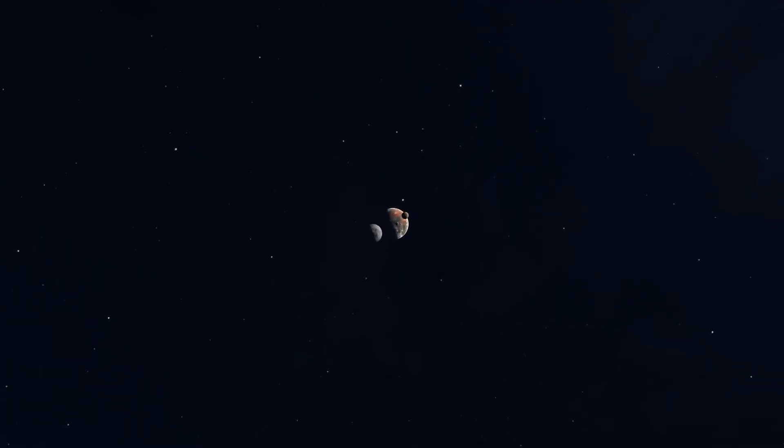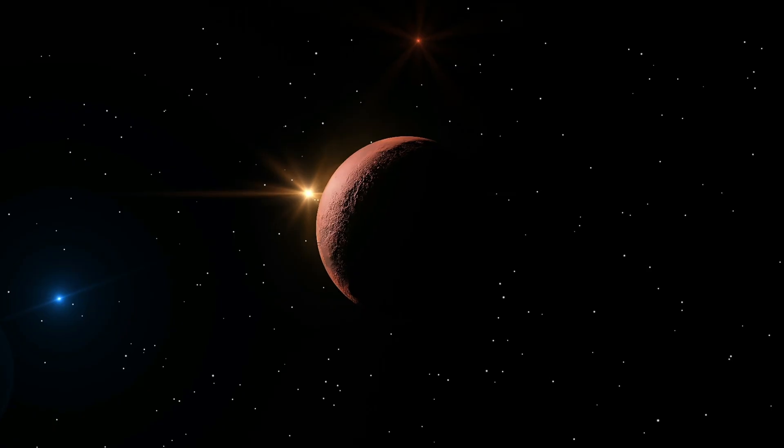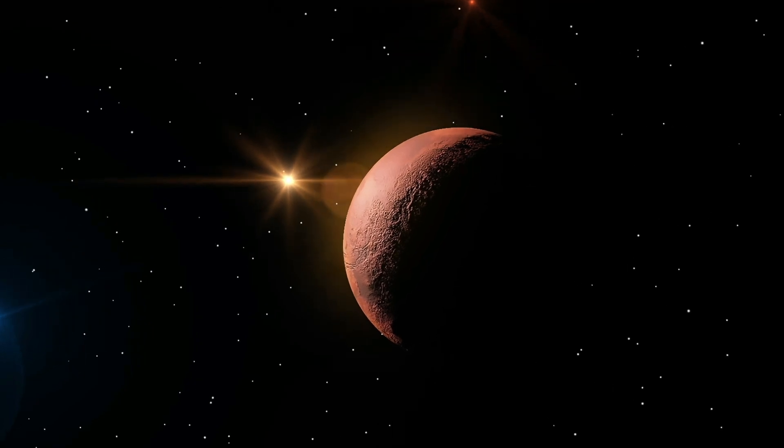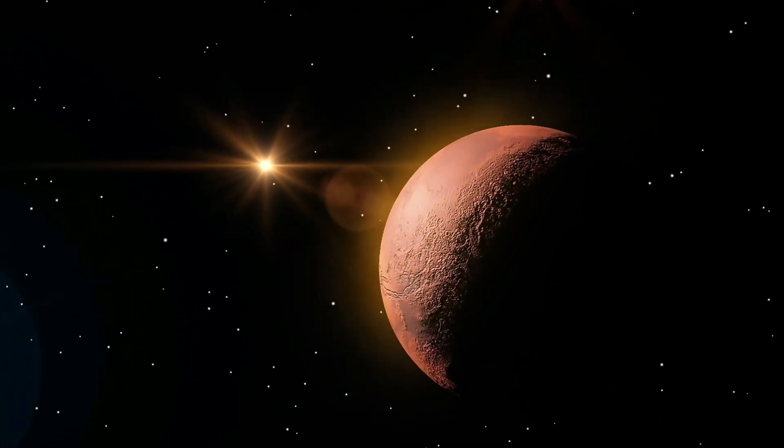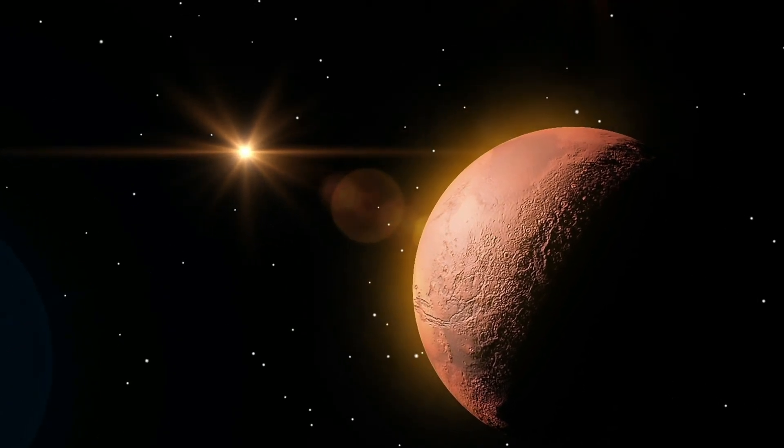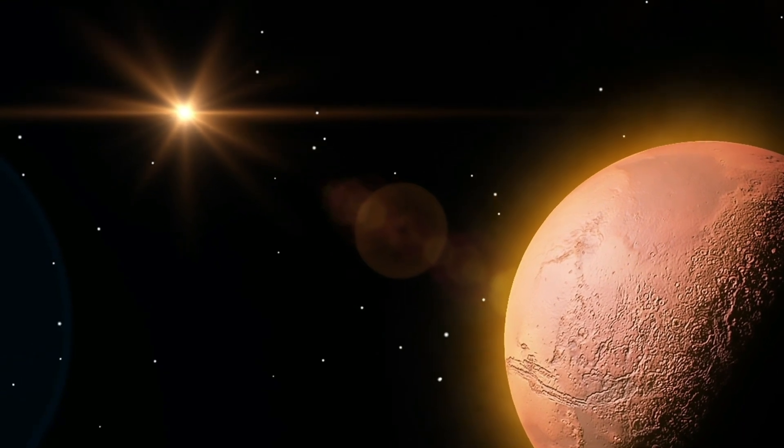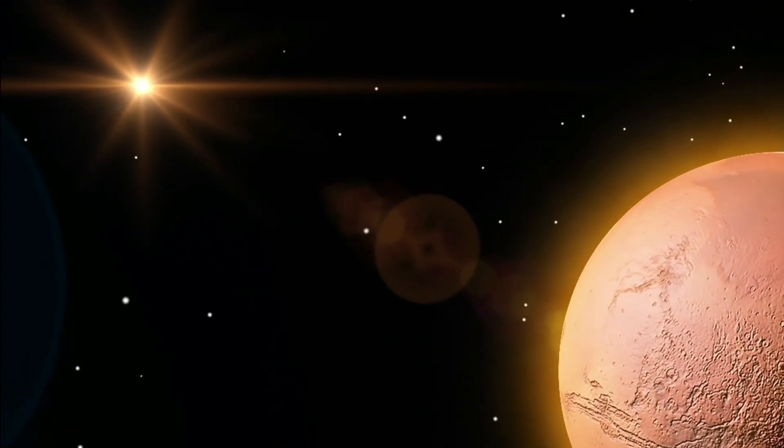Located just 4.24 light-years away, Proxima b orbits Proxima Centauri, a small red dwarf star. With a size about 1.17 times that of Earth, this terrestrial planet resides in the habitable zone, the sweet spot where conditions might allow liquid water to exist.